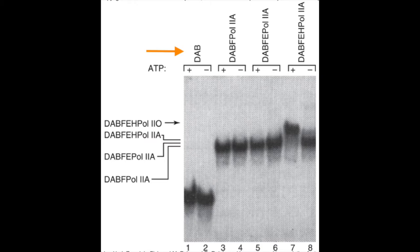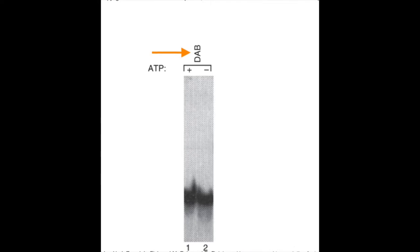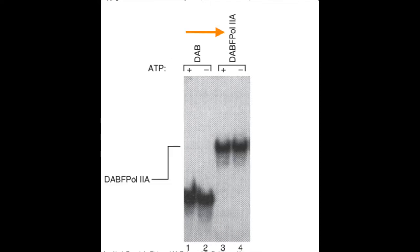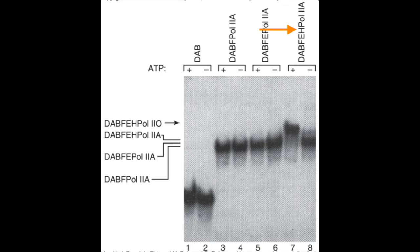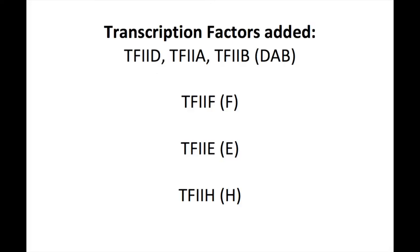You can see which transcription factors the researchers added along the top line of the gel. They first added a complex of TF2D, TF2A, and TF2B — abbreviated as DAB — followed by TF2F, TF2E, and TF2H added one at a time to build up the initiation complex. To keep track of which transcription factors are being added and the outcome of each, they are all listed here.